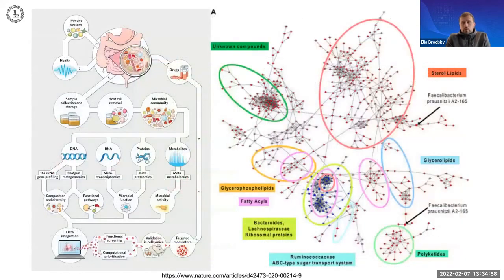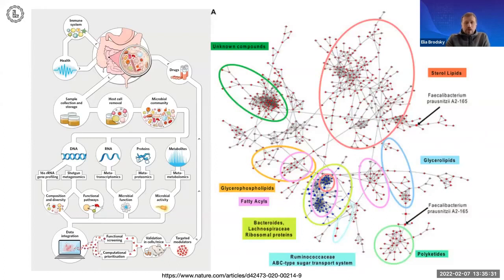Ultimately, when we have an idea of what is present and in what proportions, the whole field is trying to move toward understanding not just what it means to have more or less of a given microorganism, but what it actually means functionally — how can we use this understanding of composition or gene expression to say what the functional component of this information is. That means combining more and more different types of data to ask specific questions and apply them to topics like the impact on the immune system or interaction with drug metabolism.